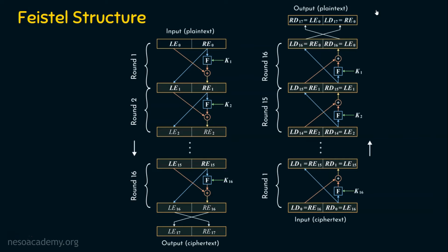This Feistel structure is the basis for block cipher concepts. The DES encryption and decryption algorithm, which we will see in the next lecture, uses this Feistel structure. The round operation is carried out iteratively, but with one difference: for each round, a separate key is used. We need a key scheduling algorithm for generating round keys, where a single fixed key generates all round keys.